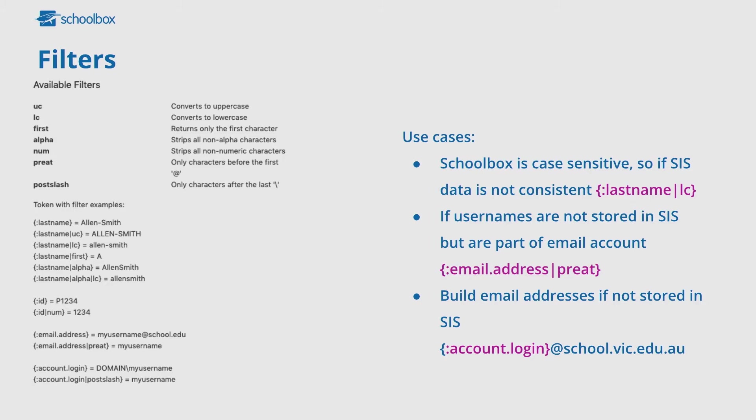The second piece to tokens are filters. The reason we use filters is because Schoolbox is case sensitive, meaning that if you have inconsistent data in your SIS — which is a problem probably eight out of ten times — you may need to filter that data as it comes through. A simple example is turning everything to either uppercase or lowercase. That way if you're saying your house codes are equal to 'G', even if it's a lower or upper 'G' within your SIS, it's coming through in the correct format so you can map it appropriately in Schoolbox.